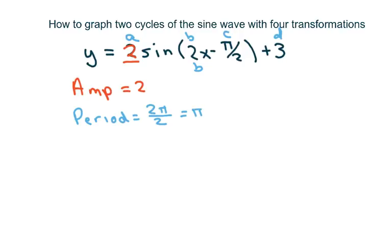And then our phase shift is negative b over c. That's your phase shift. And remember that's basically your horizontal shift.